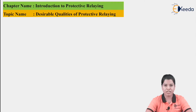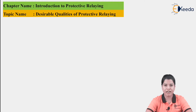We know that the power system operates under two conditions: normal condition and abnormal condition. Both the normal and abnormal conditions should be detected by the protective system. Considering this, there are various qualities which are considered as desirable for the protective relays.